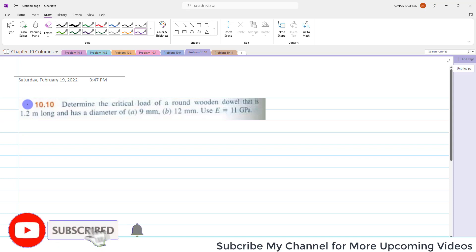Welcome back to problem 10.10. It's a very easy problem. In this problem, it is given that determine the critical loading of a round wooden dowel that is 1.2 meters long and has a diameter of 9 mm and 12 mm. E is also given which is 11 gigapascals. So you have to find critical loading.